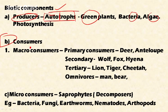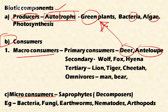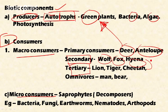Among consumers there are macro consumers and micro consumers. Macro consumers include primary consumers like deer and antelope, which feed directly on green plants. Secondary consumers like wolf, fox, and hyena feed on primary consumers. Tertiary consumers such as lion, tiger, and cheetah feed on both primary and secondary consumers. Omnivores feed on both plant and animal sources — for example, humans.